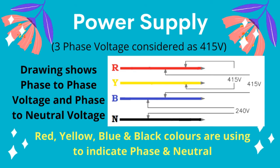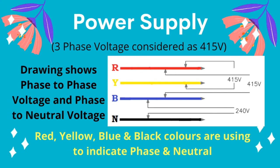Considering the 3-phase voltage, such as 415V, red, yellow, blue, and black colors are used to indicate the phases and neutral.